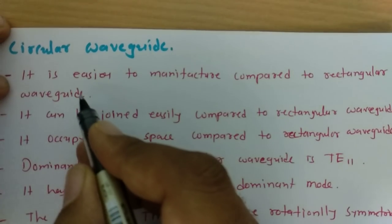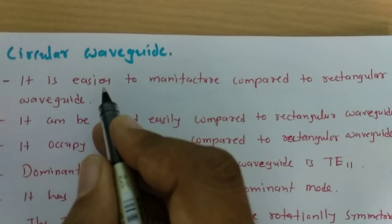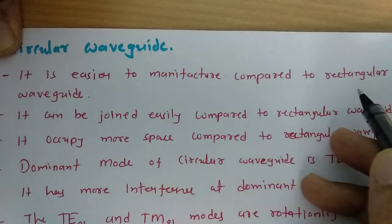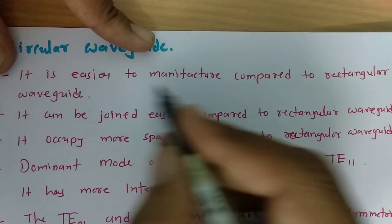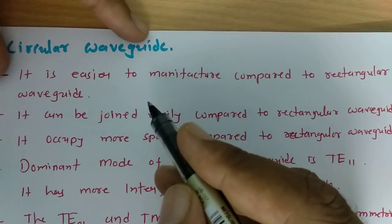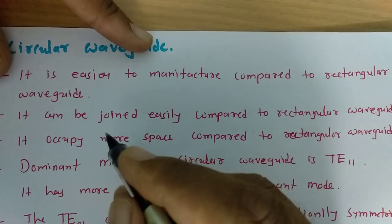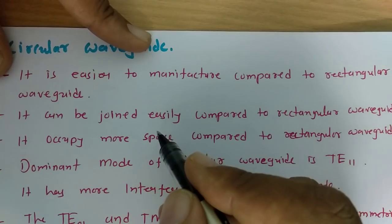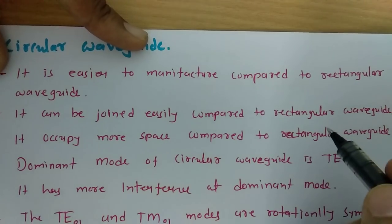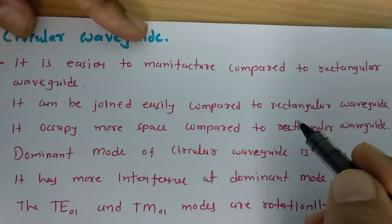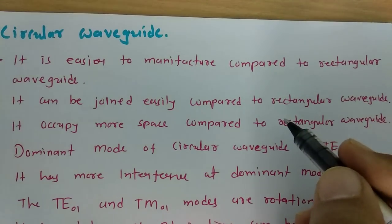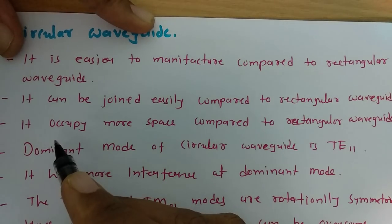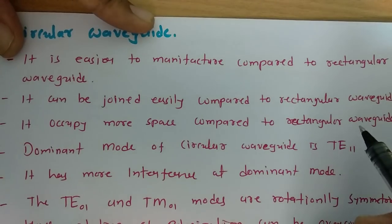When we talk about circular waveguide, manufacturing is easier compared to rectangular waveguide. Joining of two waveguides is also easier in circular waveguide compared to rectangular waveguide. However, the problem is it occupies more space compared to rectangular waveguide.